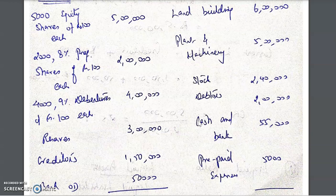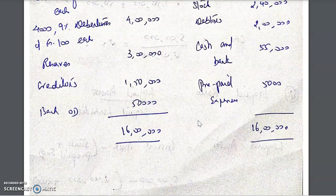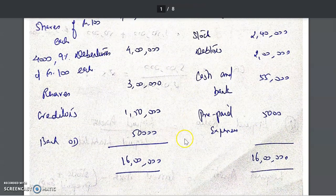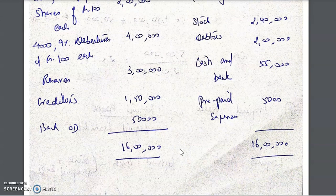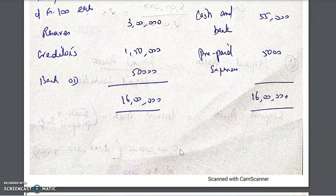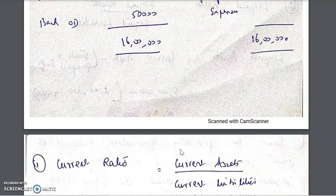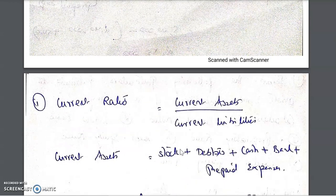We will take the details pertaining to each ratio from this balance sheet and interpret the financial position of the company. In a balance sheet you usually get both tangible and intangible assets. If the balance sheet has only tangible assets, the total assets can be obtained directly. If it has intangible assets, we need to subtract them to find the net tangible assets.